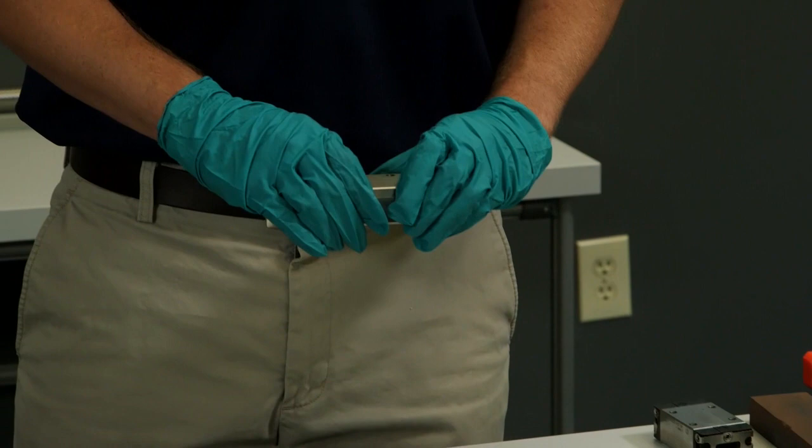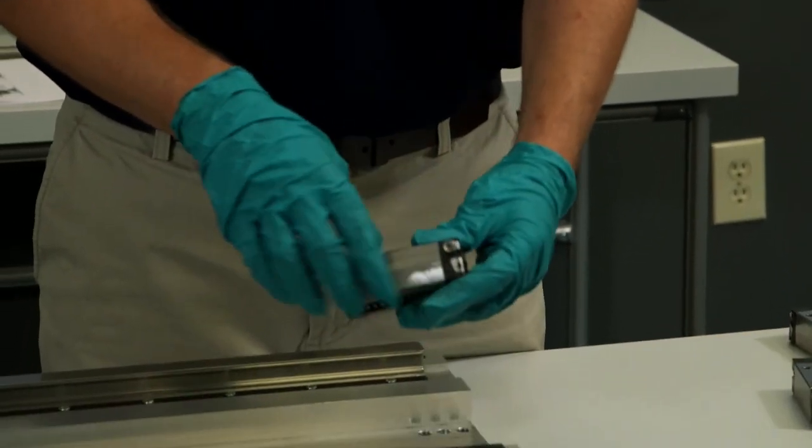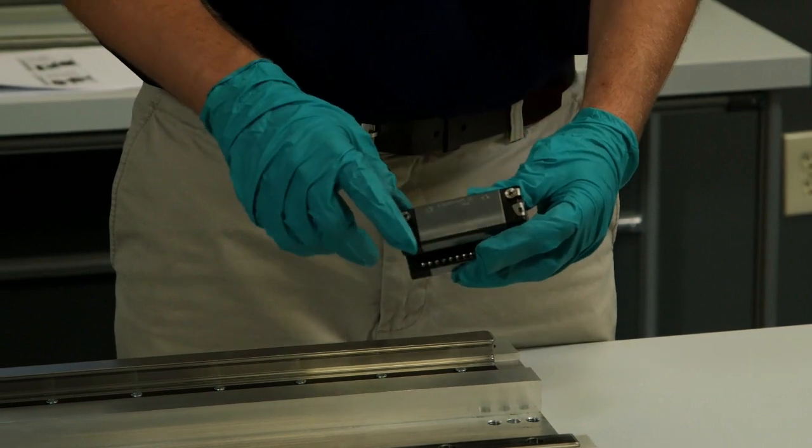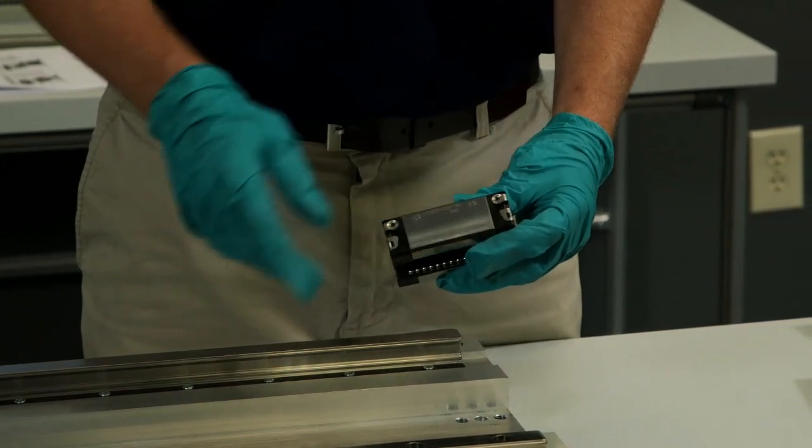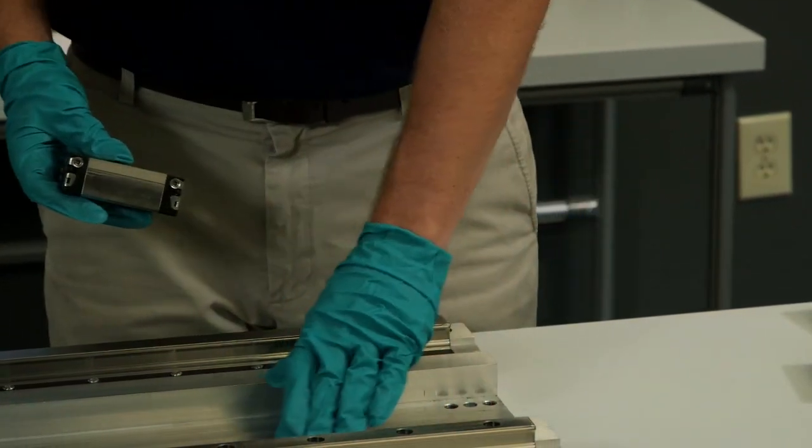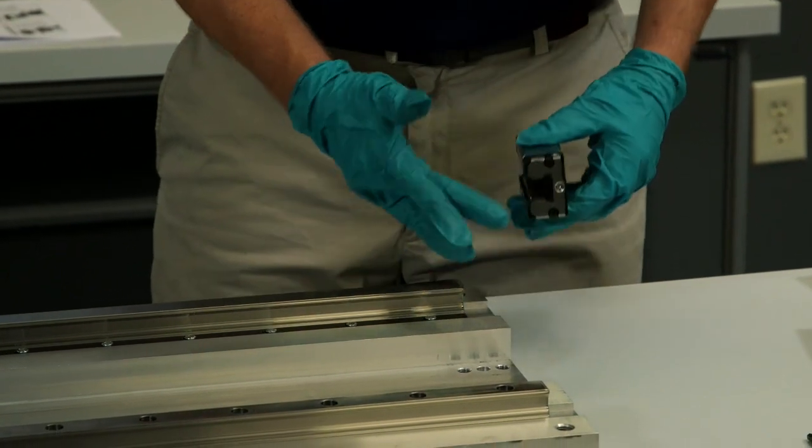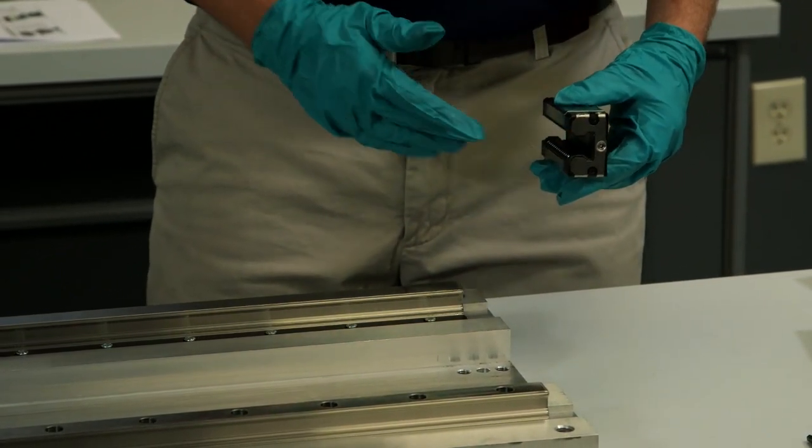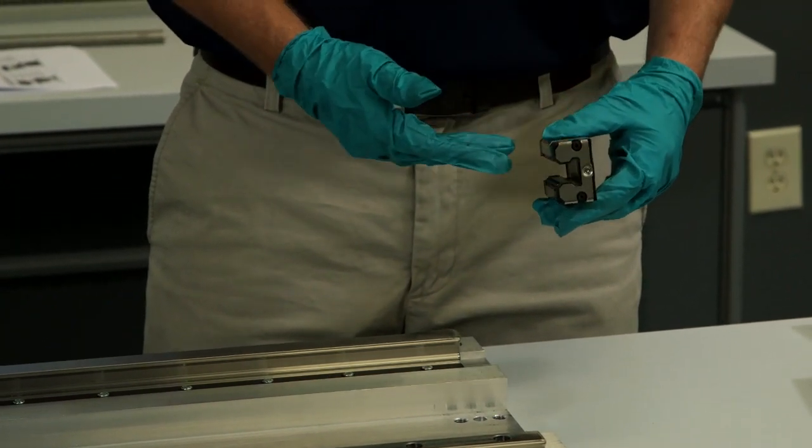So now it's time to install our blocks. As you'll see, our blocks have a reference edge and a non-reference edge. The non-reference edge is easily identifiable by having the part number on it. For this assembly, I want to keep my reference edges to the inside here. Normally these blocks would have a plastic mandrel inside, which we recommend during installation. However, I've already removed them for demonstration purposes.